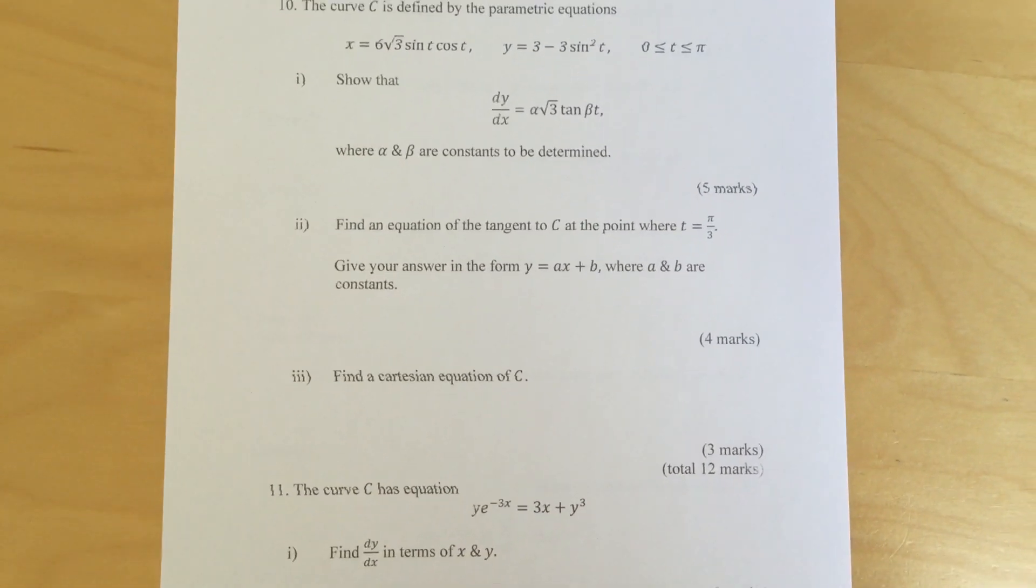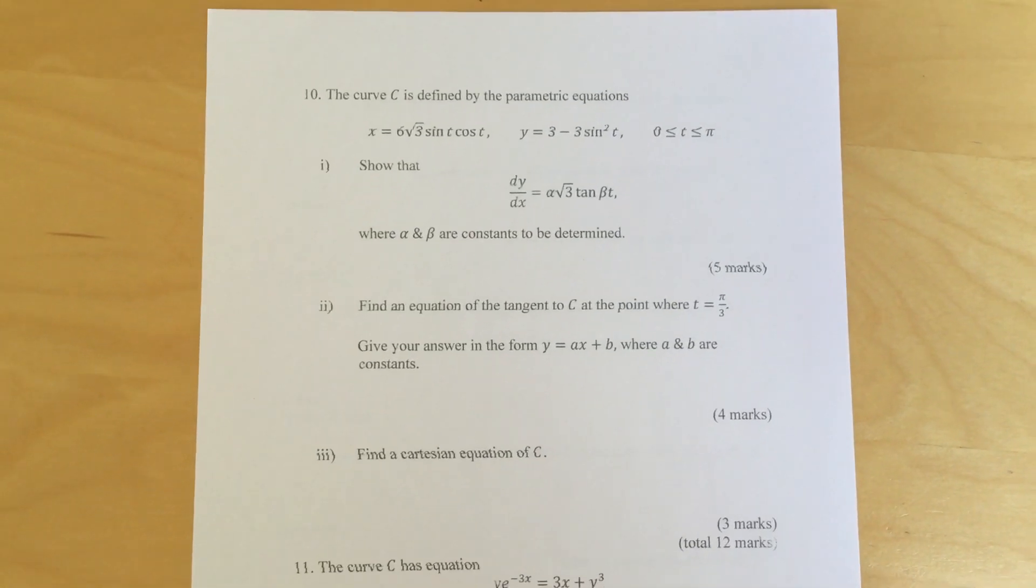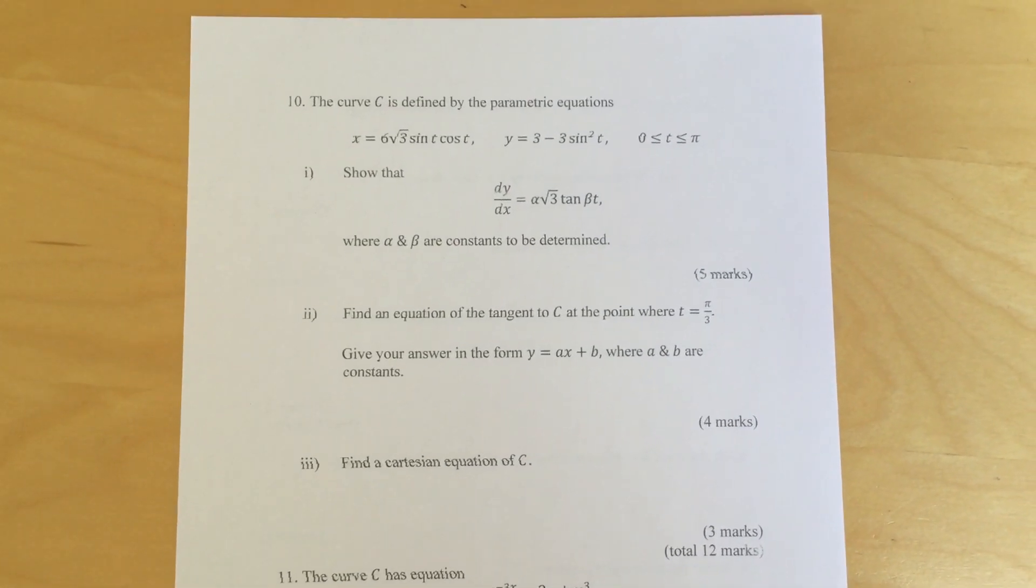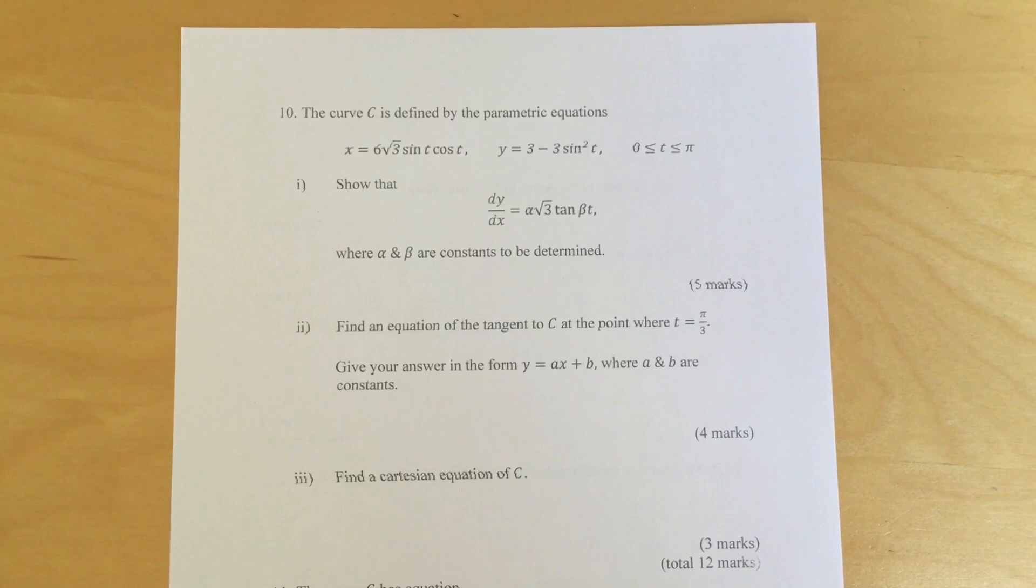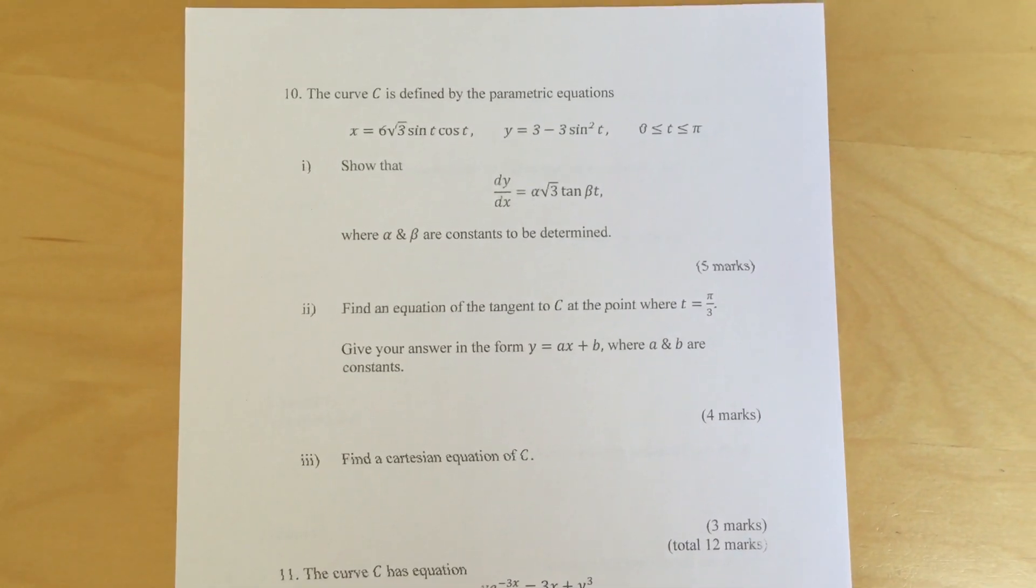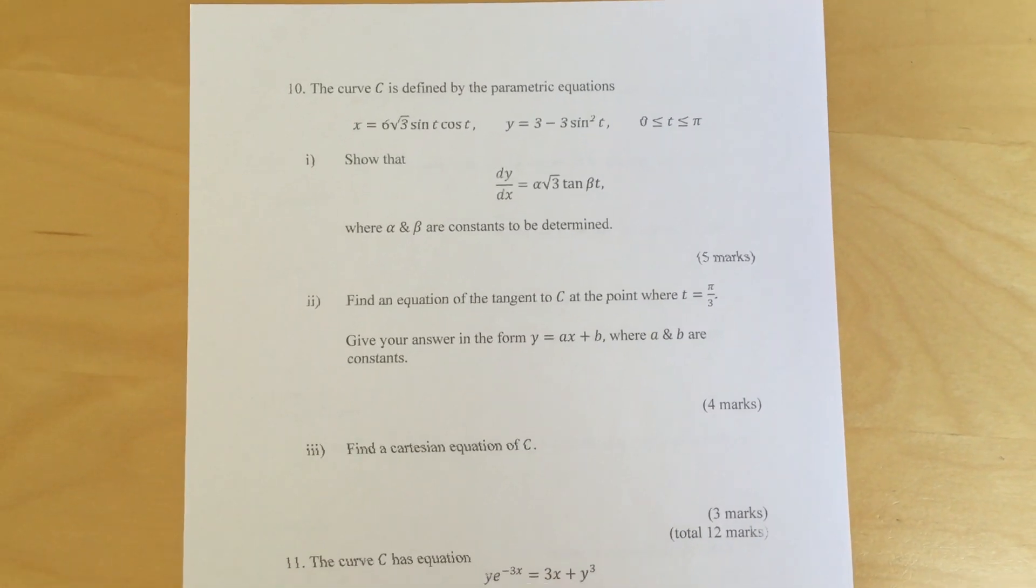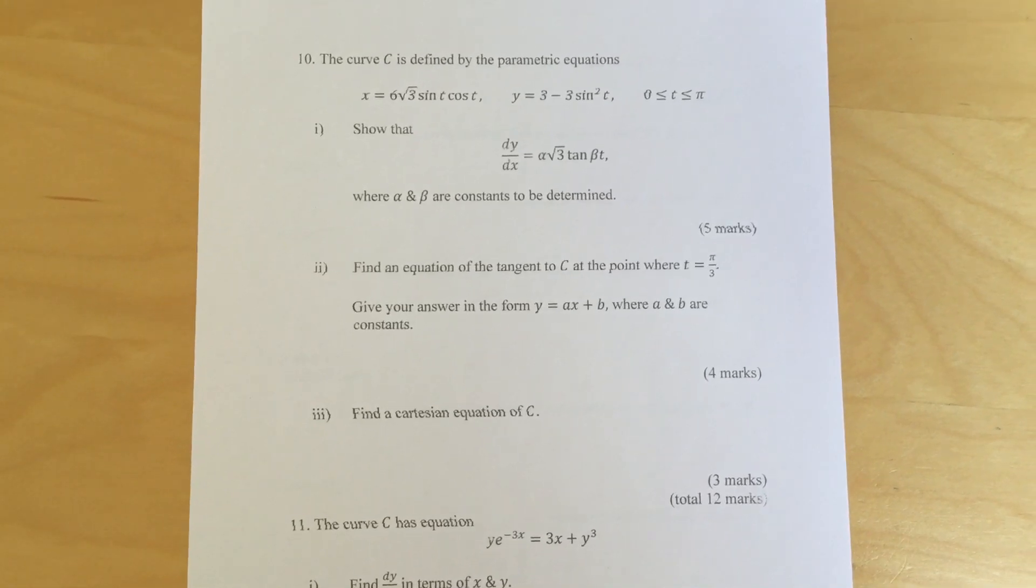Part 2: Find an equation of the tangent to c at the point where t equals pi over 3. Give your answer in the form y equals ax plus b where a and b are constants. Part 3: Find a Cartesian equation of c.